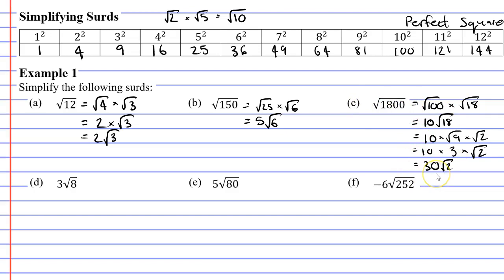The number under the radical is as small as we can possibly get it, which is why we call it the simplest form.